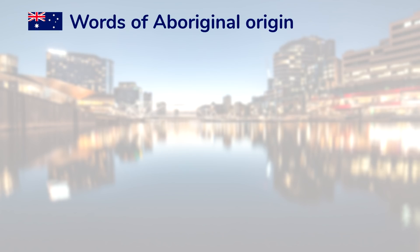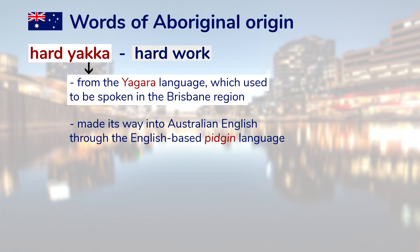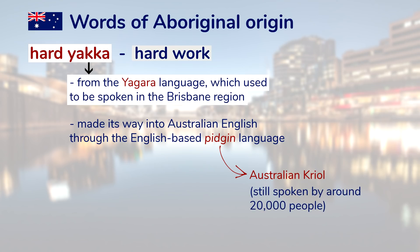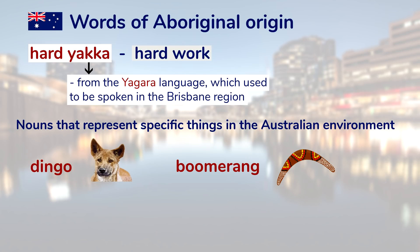There are also some words in Aussie English that originate in Aboriginal languages. One example, heard particularly in broad Australian English, is 'hard yakka,' meaning hard work. 'Yakka' is a word from the Yagara language, which used to be spoken in the Brisbane region, and made its way into Australian English through the English-based pidgin originally used between European settlers and Aboriginals — that pidgin later developed into Australian Creole, still spoken by around 20,000 people today in the Northern Territory. Other well-known nouns like 'dingo' or 'boomerang' come from the extinct Darug language, which used to be spoken in the Sydney area.